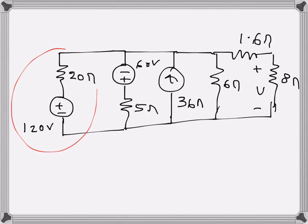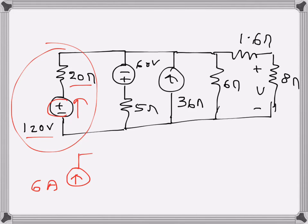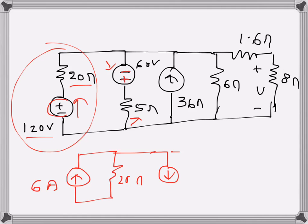To start, convert the first voltage source into a current source with a parallel resistance. That gives 120 volts divided by 20 ohms, which is 6 amps. The direction of the current source matches the direction the voltage source drives current, so the 20-ohm resistance stays. The second source is 60 volts with 5 ohms; its current direction is downwards, and the 5-ohm resistance remains in parallel.